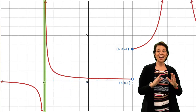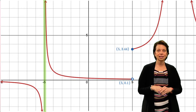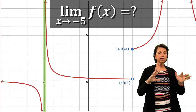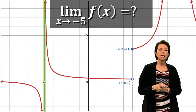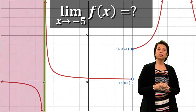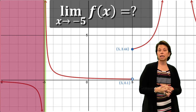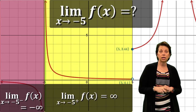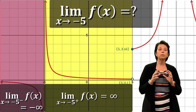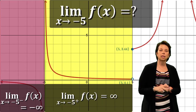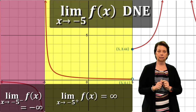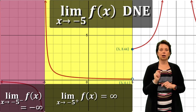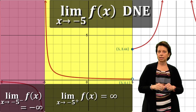Now, what's the limit as x approaches negative 5, not indicating left or right? In this case, the left-side limit equals negative infinity and the right-hand side equals positive infinity. We would say the limit as x approaches negative 5 does not exist, because we have a left-hand limit and a right-hand limit that are not the same values — or even the same infinities.